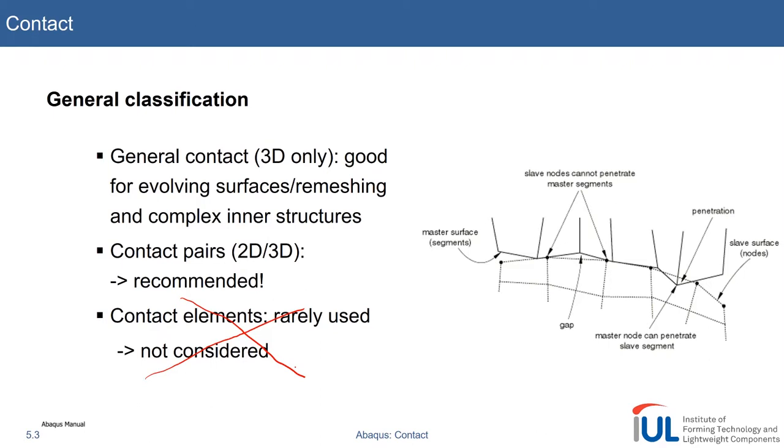The general contact is, as the name suggests, a very flexible and versatile approach. It's usually used for evolving or remeshing surfaces. Don't look at this word too much—Abaqus does not technically have a built-in remeshing algorithm, however you could write one on your own. Even in this case, general contact can assist you that you don't have to take care of the changing contact when you do remeshing. For inner structures, like when you compress or compact foams, general contact is the perfect application.